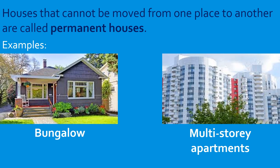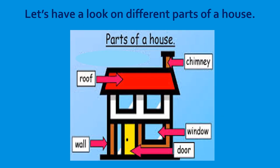Now let's have a look at the different parts of a house. The top portion is the chimney. Below the chimney there is the roof, then there are walls, a door, and a window. Just as our body has parts like eyes, ears, and nose, our house has different parts such as chimney, roof, window, wall, and doors.